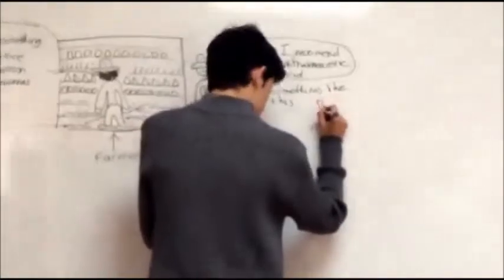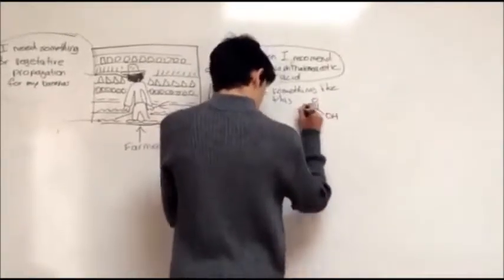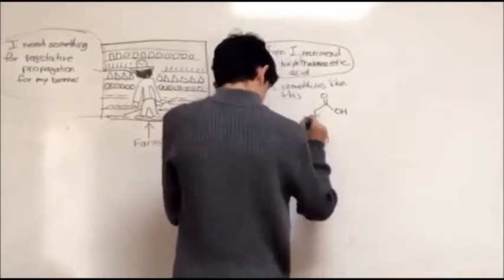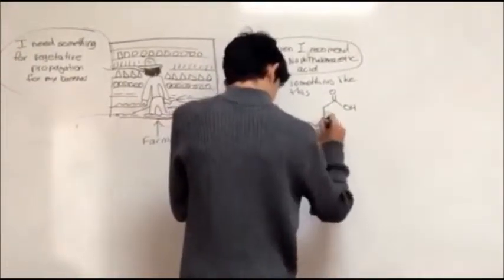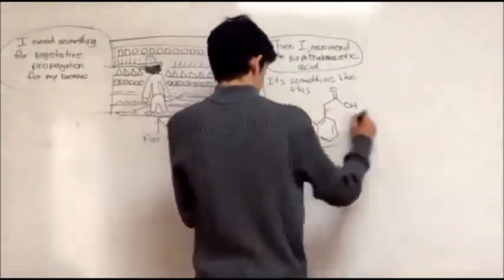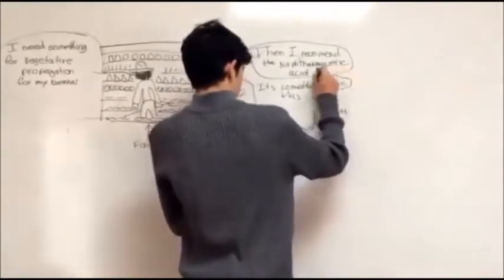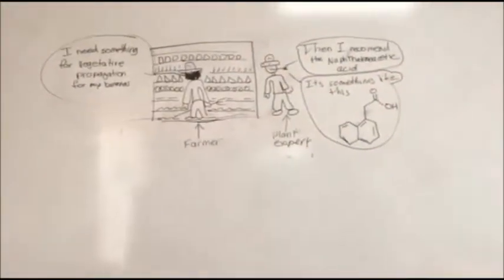You are searching for naphthalene acetic acid, or NAA, and this is its chemical composition. It's very good for vegetative growth and agricultural purposes with plants that need to produce flowers quickly.